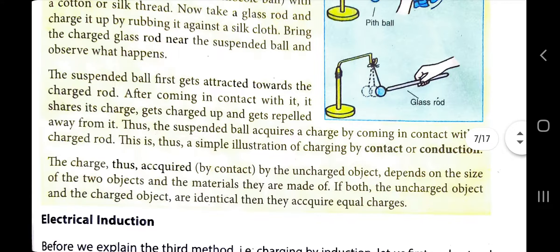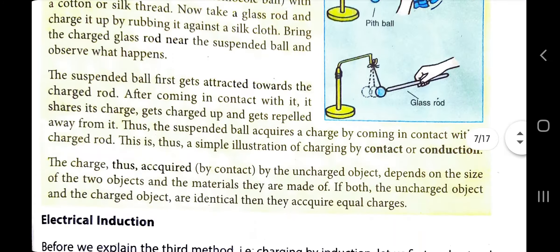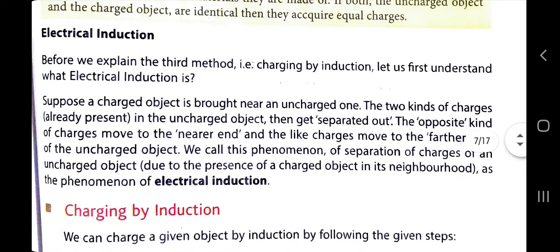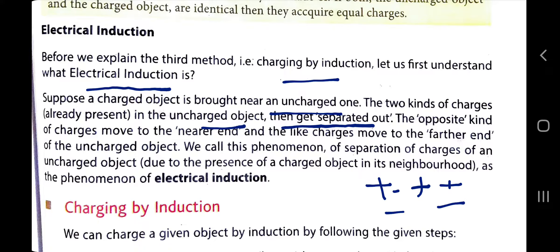This is a simple illustration of charging by contact or conduction. Now, the next method is charging by induction. Before explaining it, let us understand what electrical induction is. Suppose a charged object is brought near an uncharged object. The two kinds of charges already present in the uncharged object are balanced — the same number of positive and negative charges are distributed on the object.